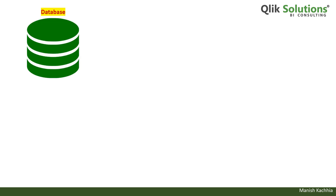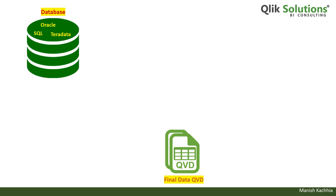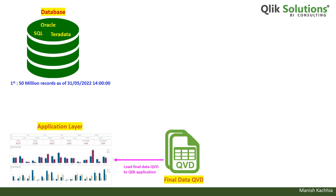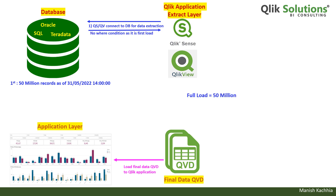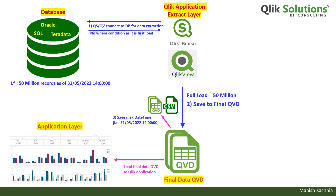And a primary key which will be used to sort out updated records from the QVD file. The process is the same: we have a database which could be Oracle, SQL, Teradata or any other database. Our objective is to create a final data QVD which will be further used for the application layer. We have 50 million records as of 31st of May 2022 and the final data QVD does not exist yet. We perform a full load using the Qlik application with no filter, getting 50 million records saved as the final data QVD. We also save another QVD containing the updated date and time.